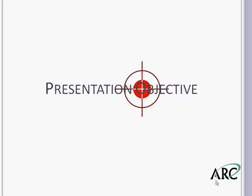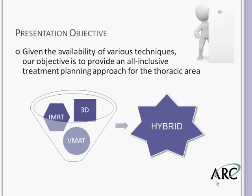Our objective today is to provide an all-inclusive treatment planning approach to the thoracic area. Given the options available — specifically 3D, IMRT, and VMAT — can we yield a plan that gains from all three? What we'll term a hybrid plan. We believe that the fusion of dual techniques can provide an opportunity to promote the best of both worlds, adopting the benefits of 3D while optimizing and using the advantages of IMRT or VMAT.